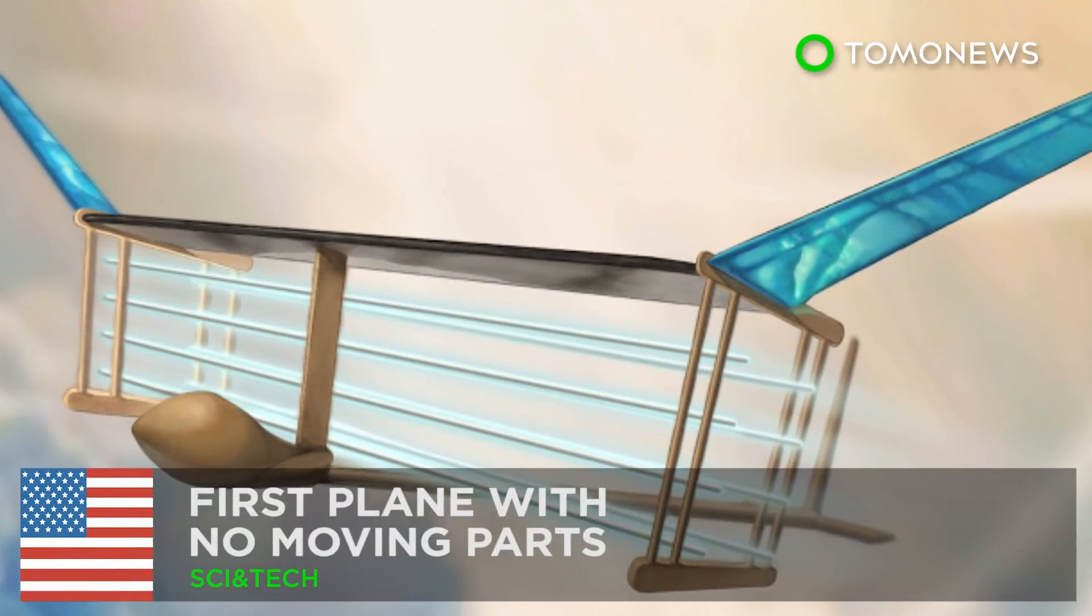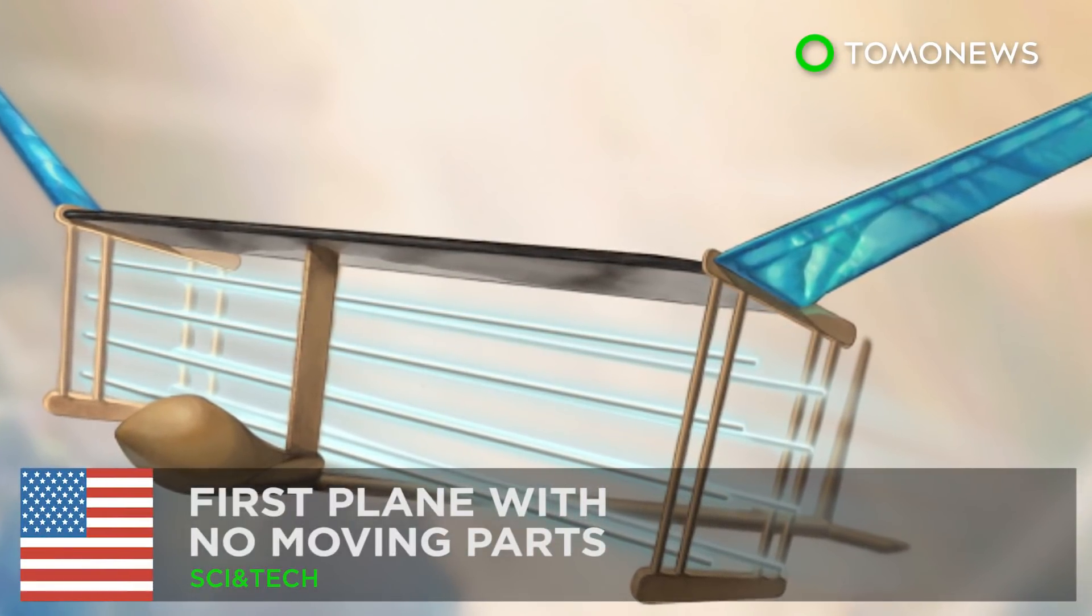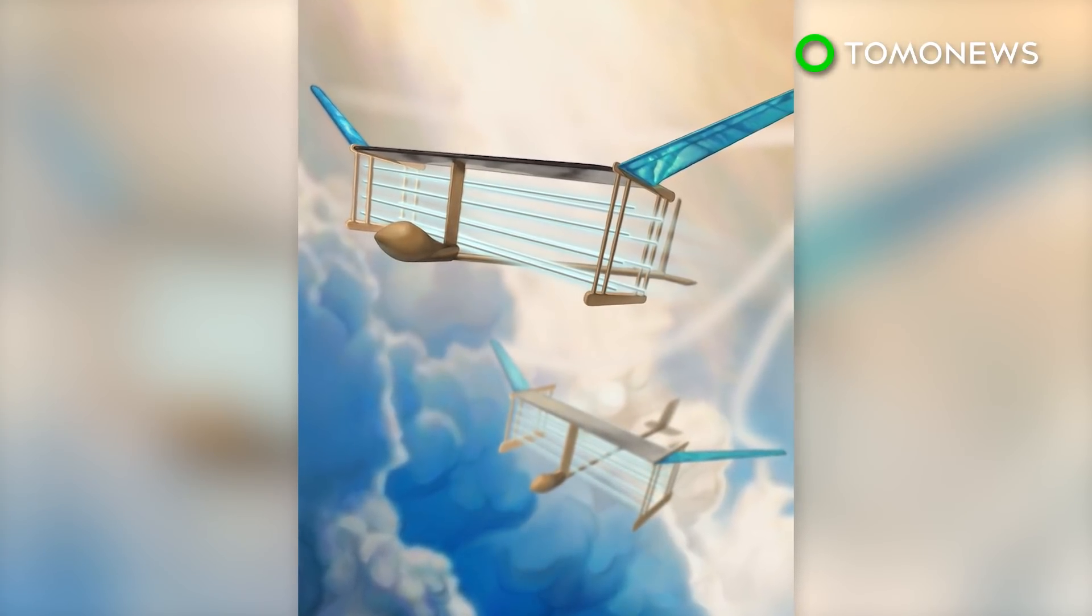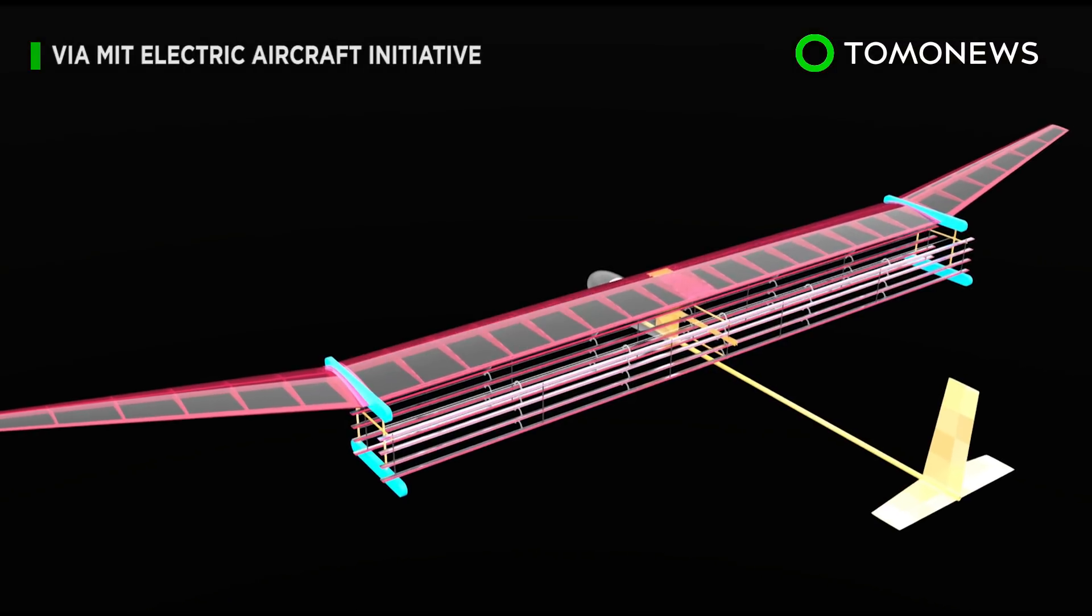The aircraft flew all on its own with the magic of ionic wind. Engineers at MIT have managed to fly an airplane with no turbines, engine, or propeller. Here's how.